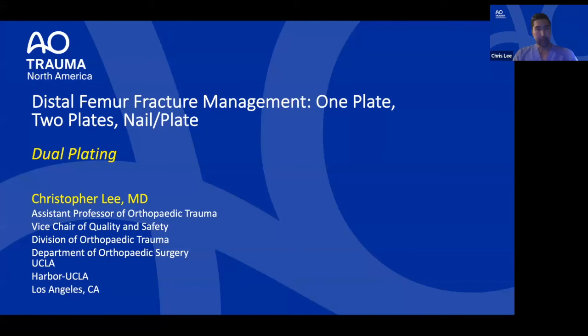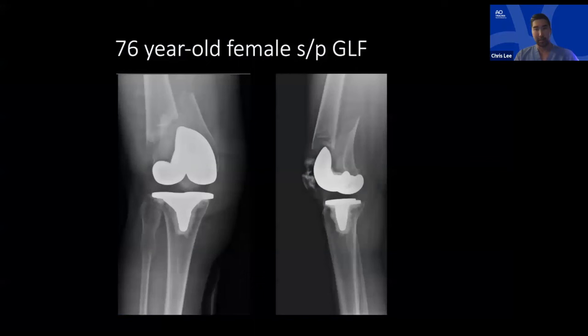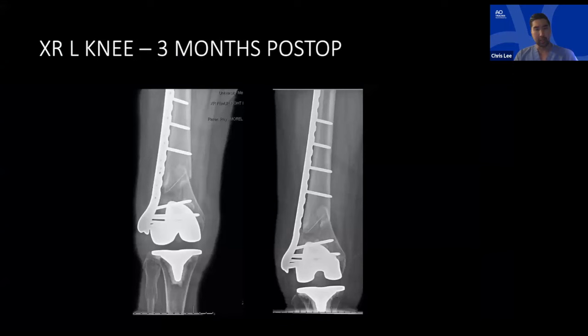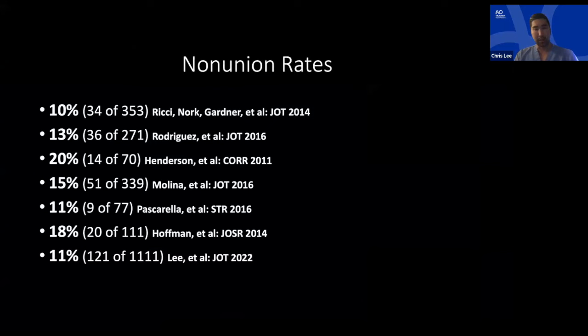Chris Lee: I'm tasked with making dual-plate believers of all of you. Here's a traditional case: a 76-year-old female with a relatively simple supracondylar distal femur fracture, plated with a reasonable technique and alignment — and at three months she had varus collapse and failure. Non-union rates for single lateral plate in the literature range from 10 to 20 percent; our recent series of 1,111 patients showed about 11 percent non-union risk, still relatively high compared to other fractures.